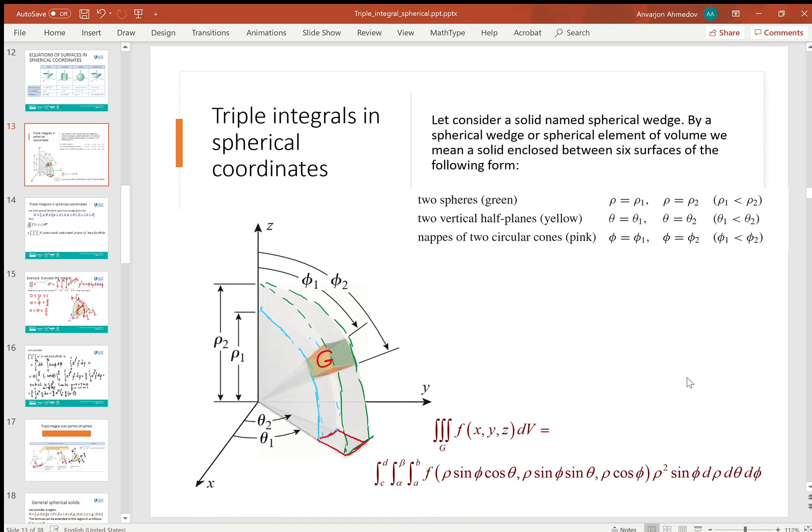Let's apply triple integrals in spherical coordinates to calculate triple integrals by transforming them to spherical coordinates. Let's consider a simple case when the solid is named a spherical wedge. By spherical wedge or spherical element of volume, we mean a solid enclosed between six surfaces of the following form: between two spheres, sphere of radius ρ₁ and ρ₂, between